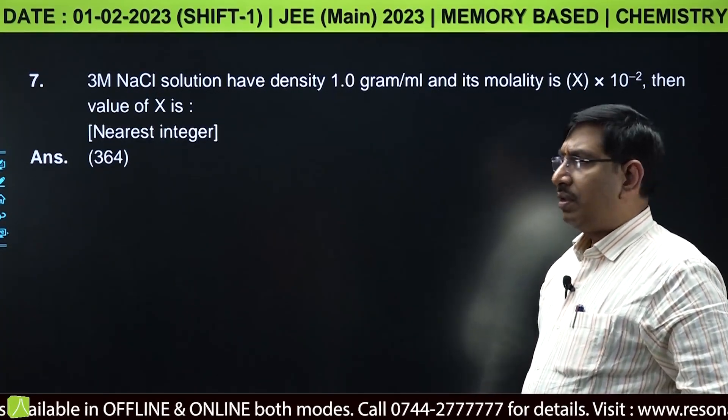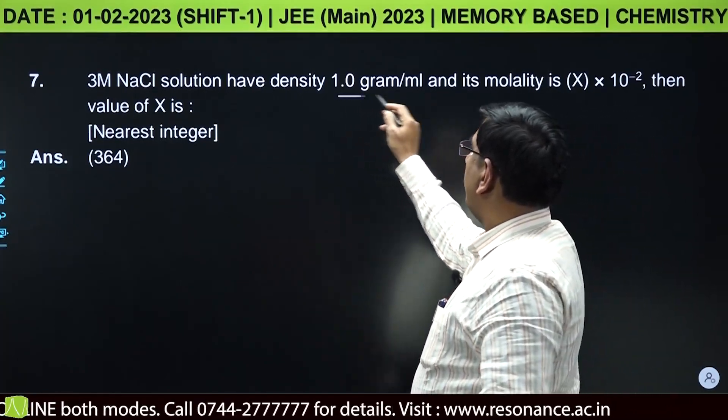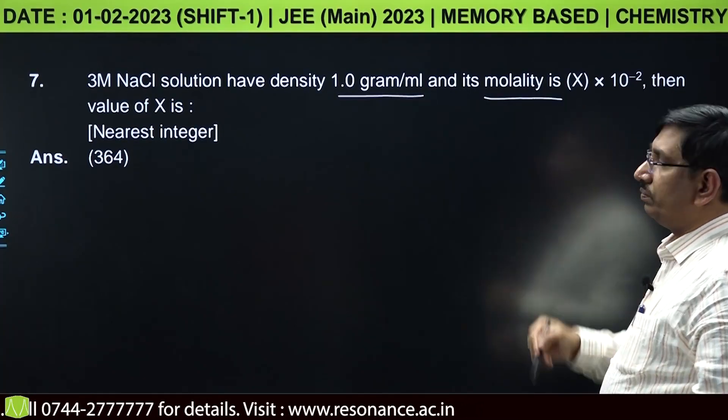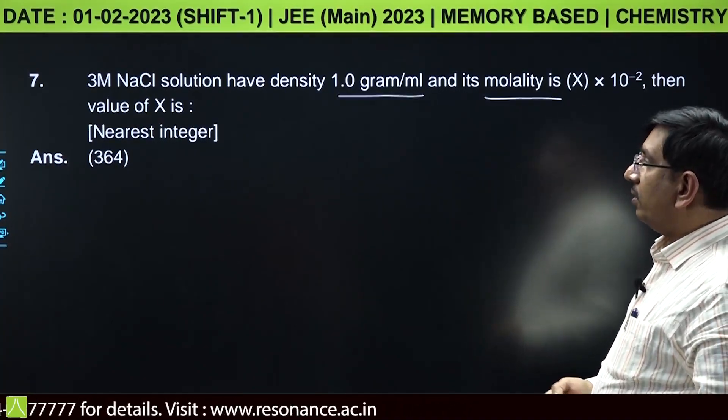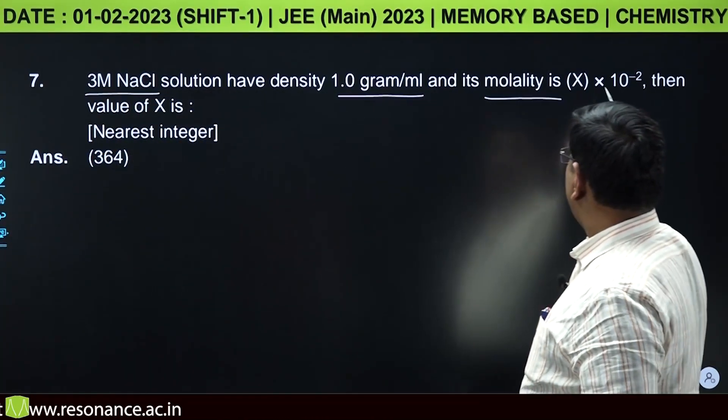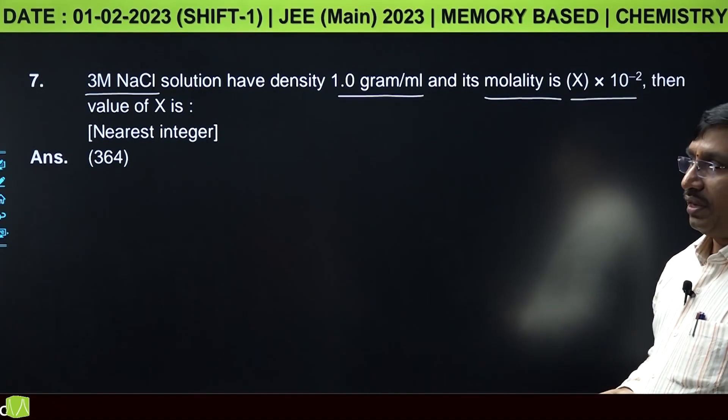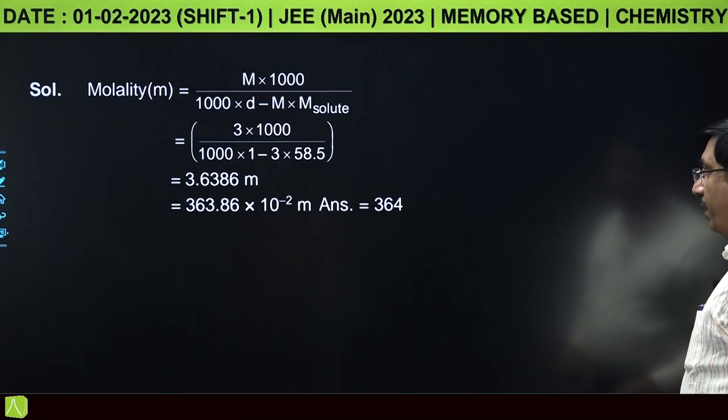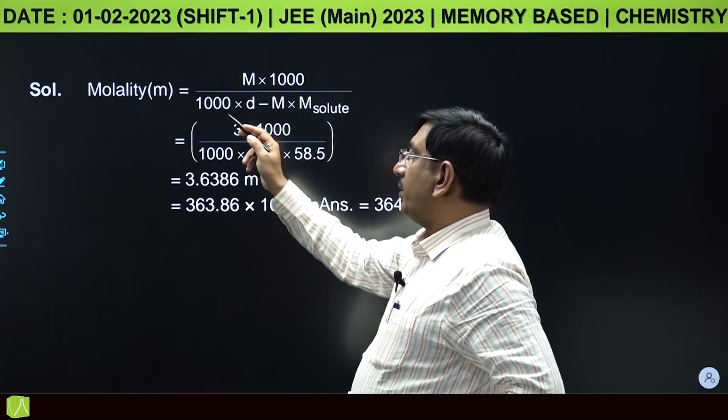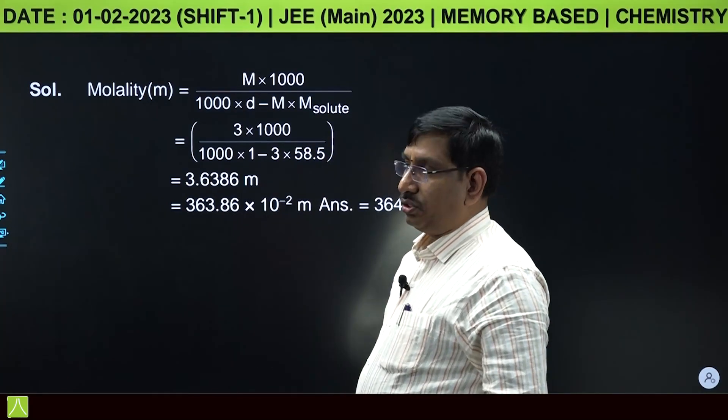From solutions: 3 molar NaCl solution has density 1 gram per milliliter. Molality needs to be found and reported as x × 10-2. Molarity is given, molality to be calculated.